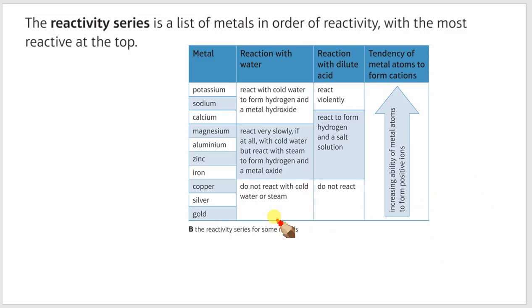Here we've got a nice summary table showing us how the metals react with water and how the metals react with dilute acid. In this column, we've got tendency, or likelihood, chances of the metal atoms forming cations. So we've just looked at that. So increasing ability of metal atoms to form positive ions. All metals will form positive ions.